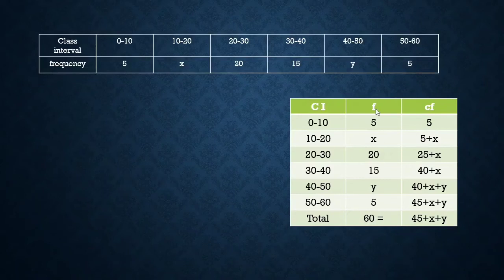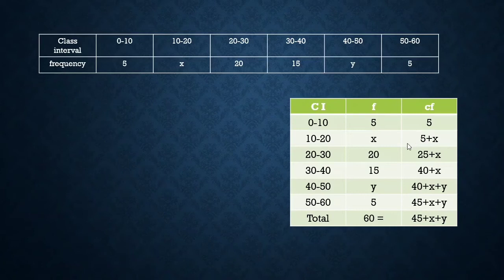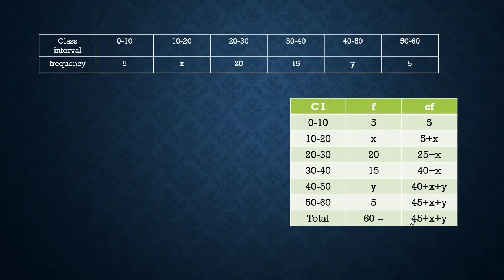We add a cumulative frequency column: 5, 5+x, 25+x, 40+x, 40+x+y, 45+x+y. The last cumulative frequency always equals n, so 45+x+y = 60, giving us Equation 1: x + y = 15.